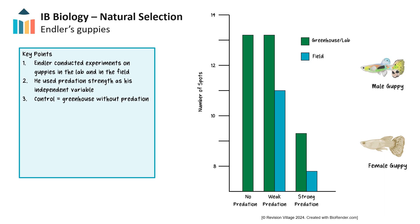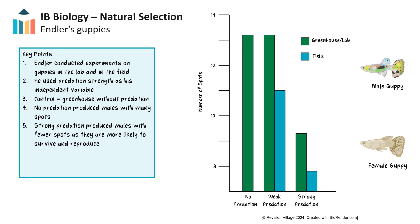Pause the video and see if you can identify any conclusions that can be drawn from the data. We can see from the graph that in the greenhouse where there was no predation, sexual selection favored many spots in males, suggesting that females favored males with a colorful display, and those that had many spots reproduced more often. In areas with weak predation, there appears to be no difference in the laboratory setting in the number of spots in males, suggesting that sexual selection for spots is still stronger than the predator selection against spots. However, in the field, the number of spots decreases. This could indicate that other predators or other factors are selecting against males with spots in the field that are not found in the lab. Under strong predation, the predator selection pressure is stronger than the sexual selection pressure for both groups.